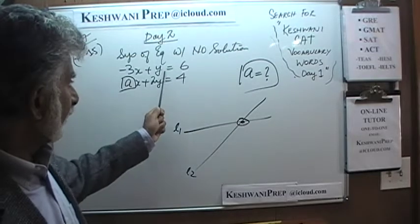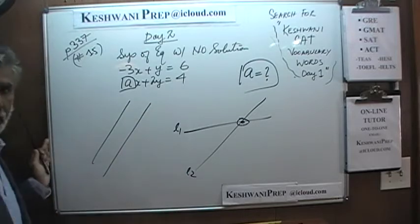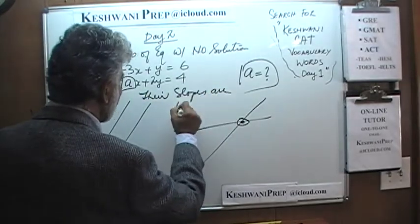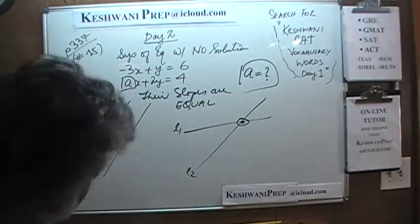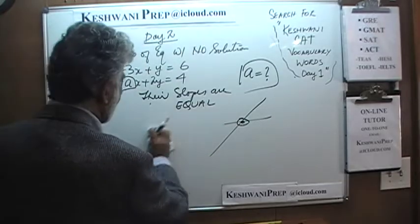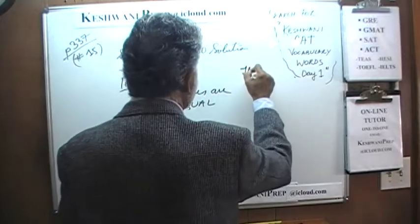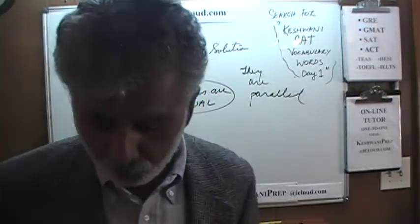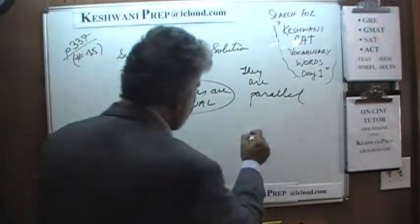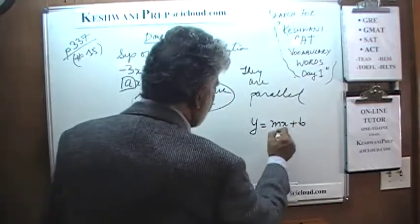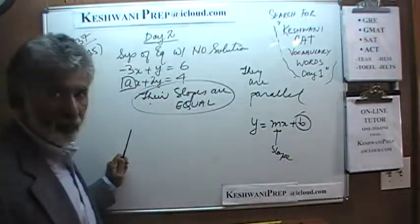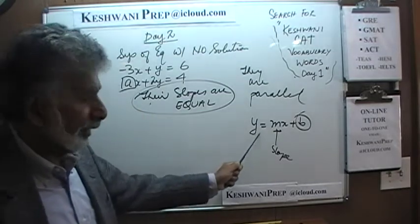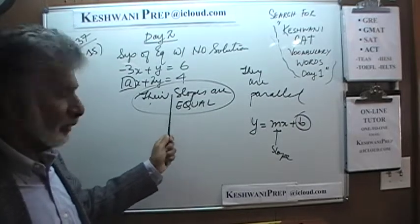The two lines are parallel, meaning they have equal slopes. All we have to do is write each equation in slope-intercept form y = mx + b. We're not interested in the intercept at all — we just want to find the slope from each equation, equate them, and solve for a. Here is the first equation: −3x + y = 6, and the second equation: ax + 2y = 4.